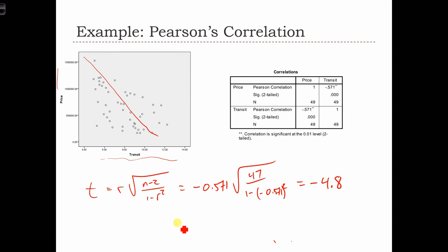So if we have the normal curve, minus 4.08 is going to be way out here in the tail. It's definitely going to be past a critical value associated with an alpha of 5%.